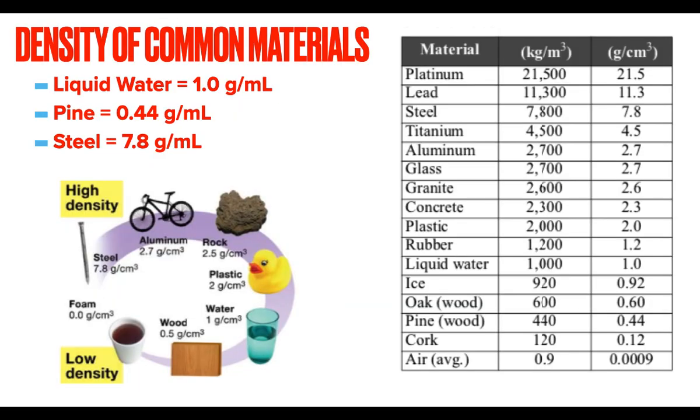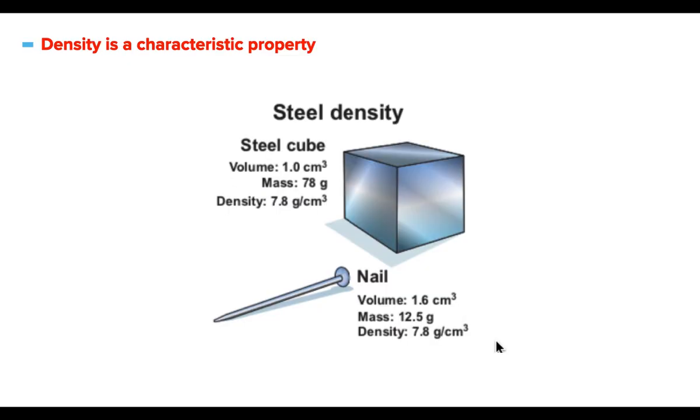Some densities of common materials, just to look at the table here. Water, liquid water, this one should be definitely committed to memory. Water is one gram per milliliter. Pine, most of us know if you take a piece of pine wood, you throw it in water, it's going to float. Look at that, it has a density of 0.44 grams per milliliter. Steel, on the other hand, if we have a solid chunk of steel and I just toss it in the water, it's probably going to sink. Look at its density, 7.8 grams per milliliter. Usually things that float are going to have a density less than one. Things that don't float are going to have density more than one on average.